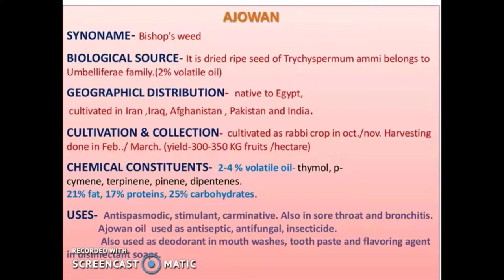Cultivation and collection: cultivated as a rabi crop in October to November, harvesting done in February to March, and yield is 300 to 350 kg fruits per hectare. Chemical constituents: contains 2 to 4% volatile oil, thymol, p-cymene, terpinene, pinene, and dipentene. It contains 21% fat, 17% protein, and 25% carbohydrates.